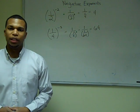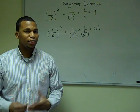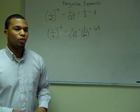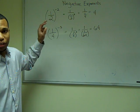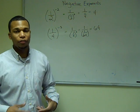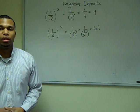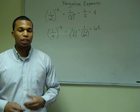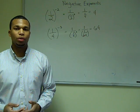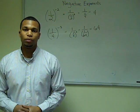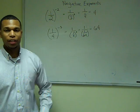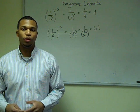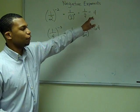Now let's see what happens when you have a fraction as the base. We have one half raised to the negative second power. First we find one half to the second power, which is one fourth. Since we have the negative, we find the reciprocal of one fourth, which is four. So our answer is four.